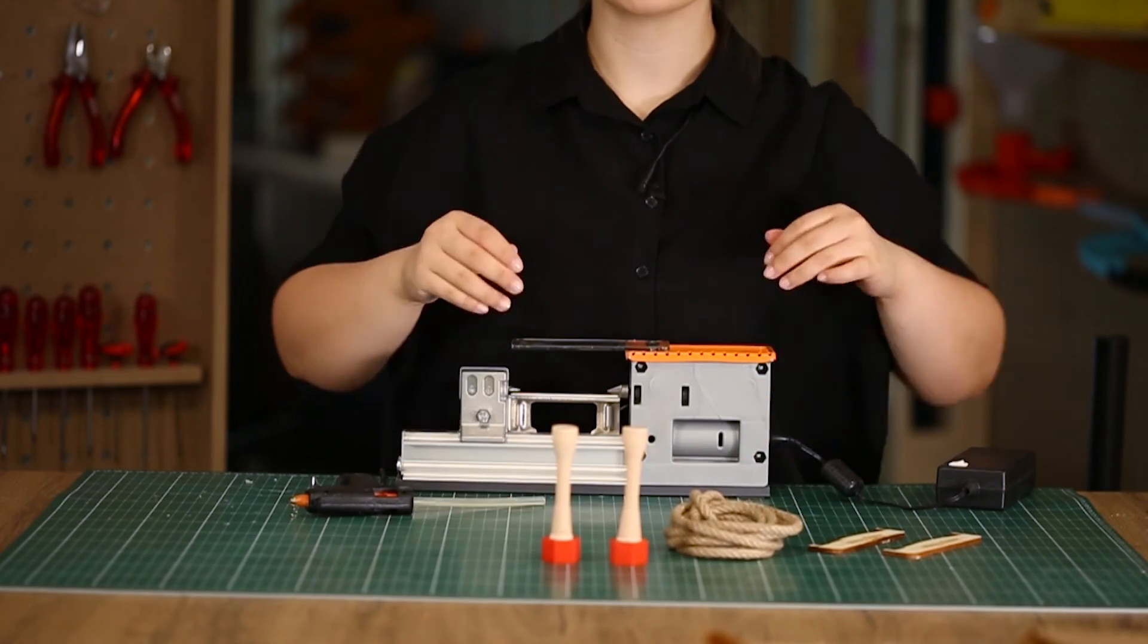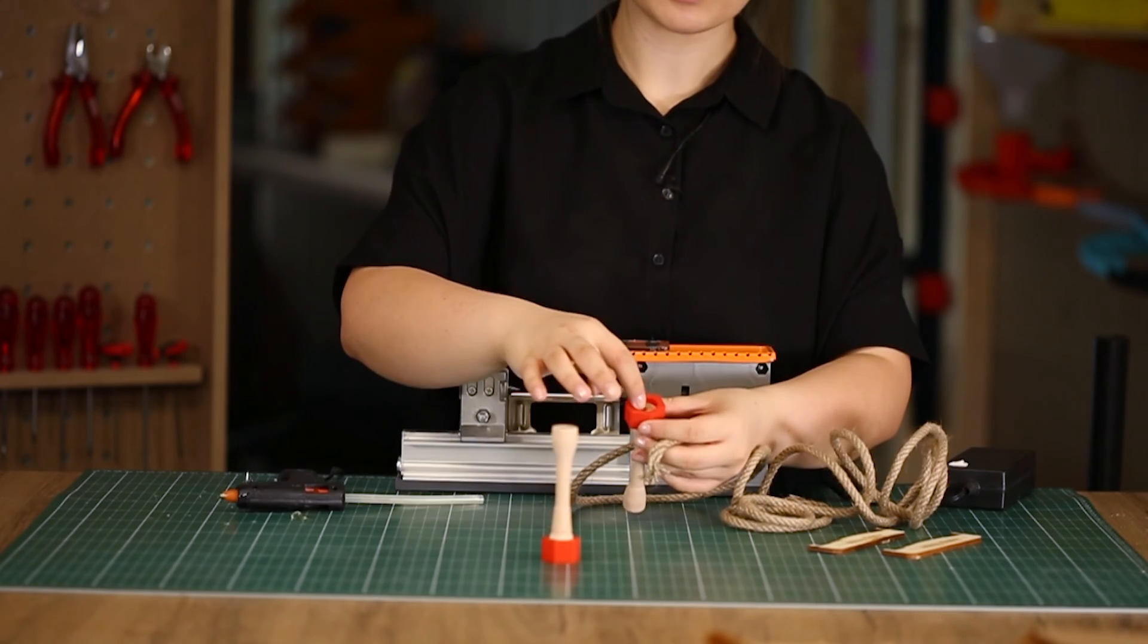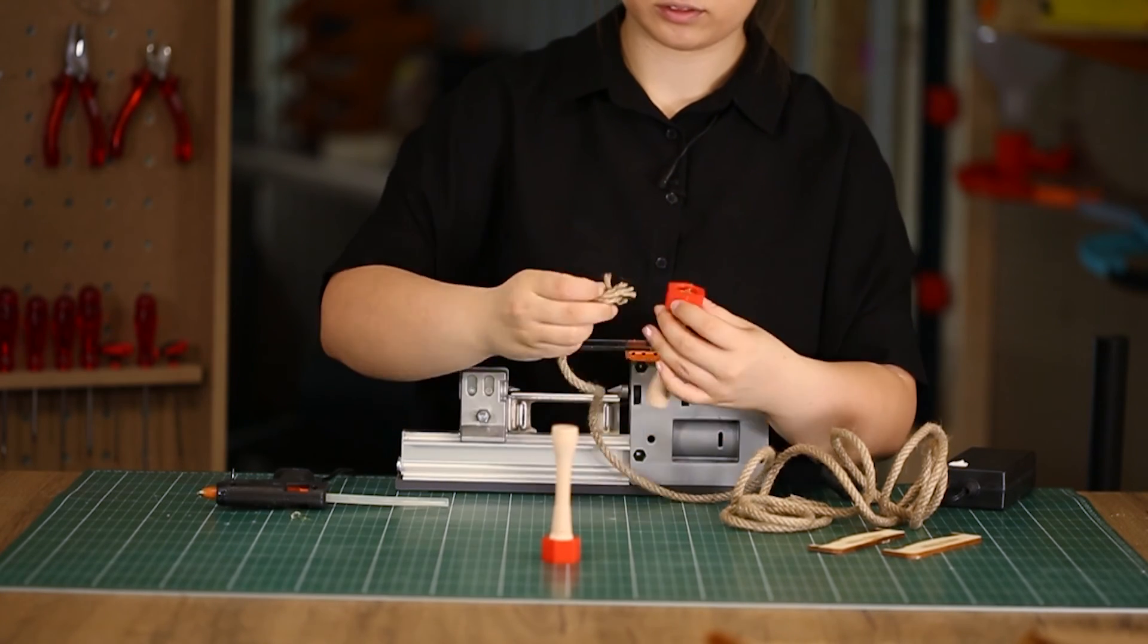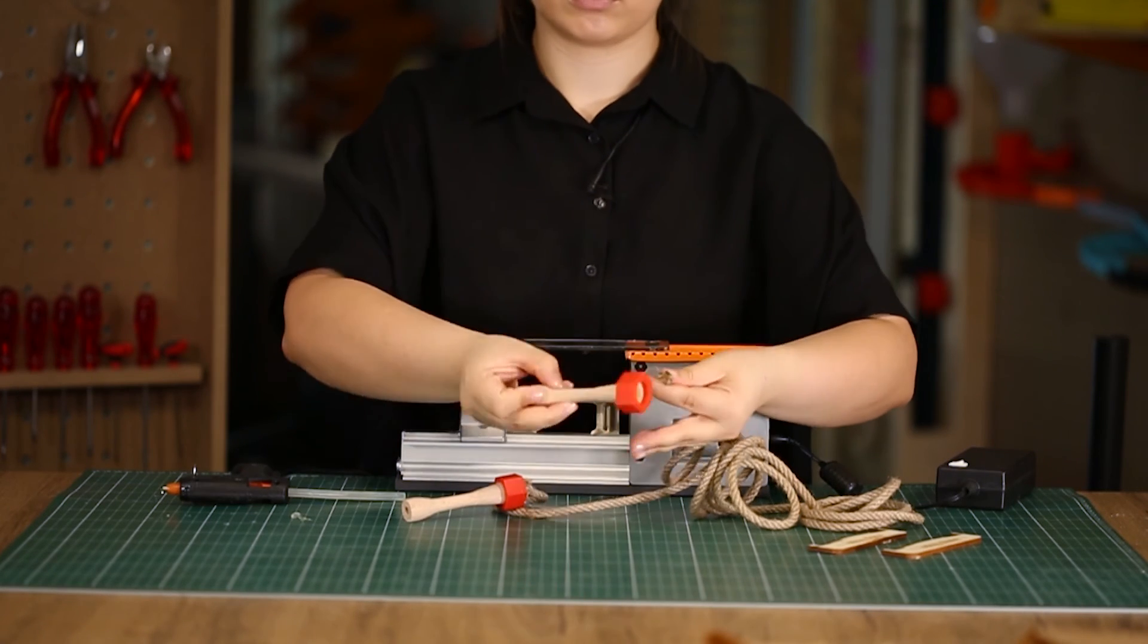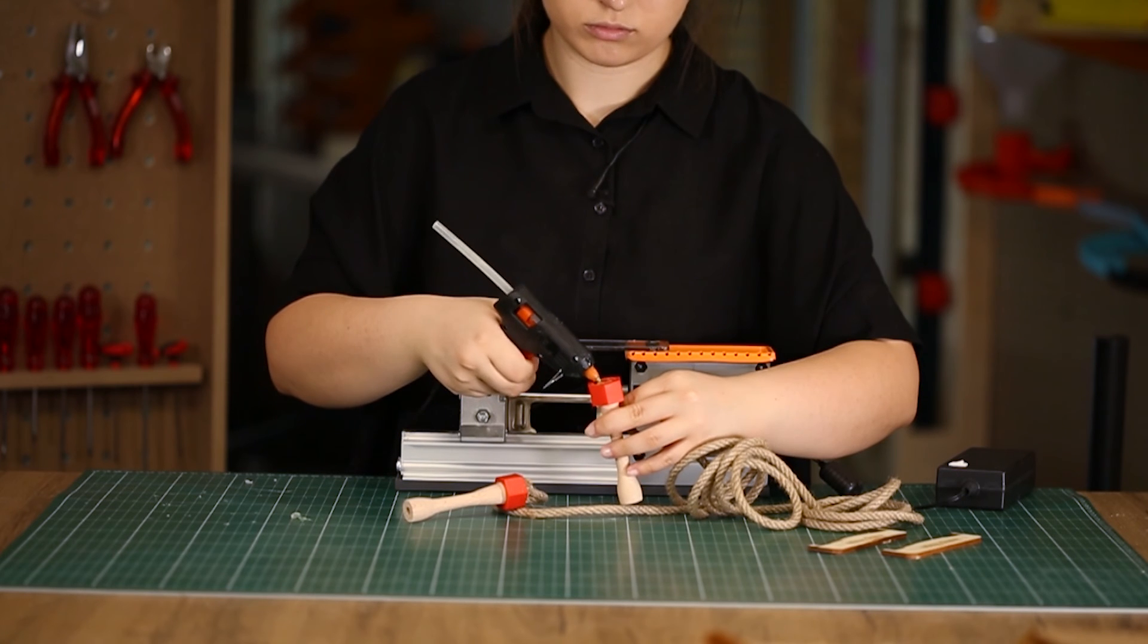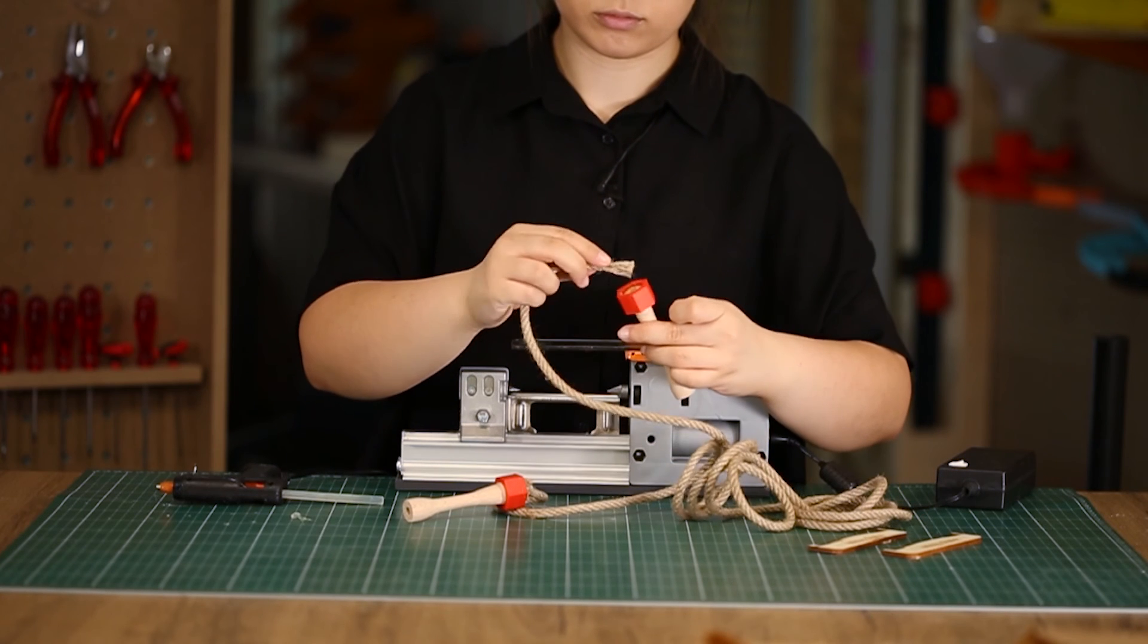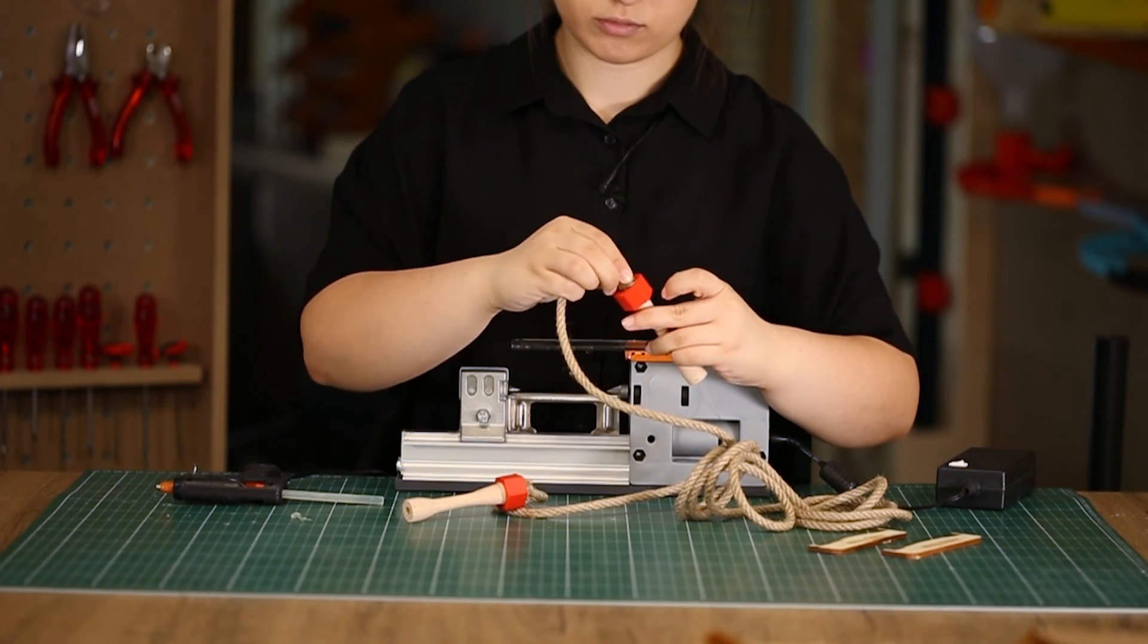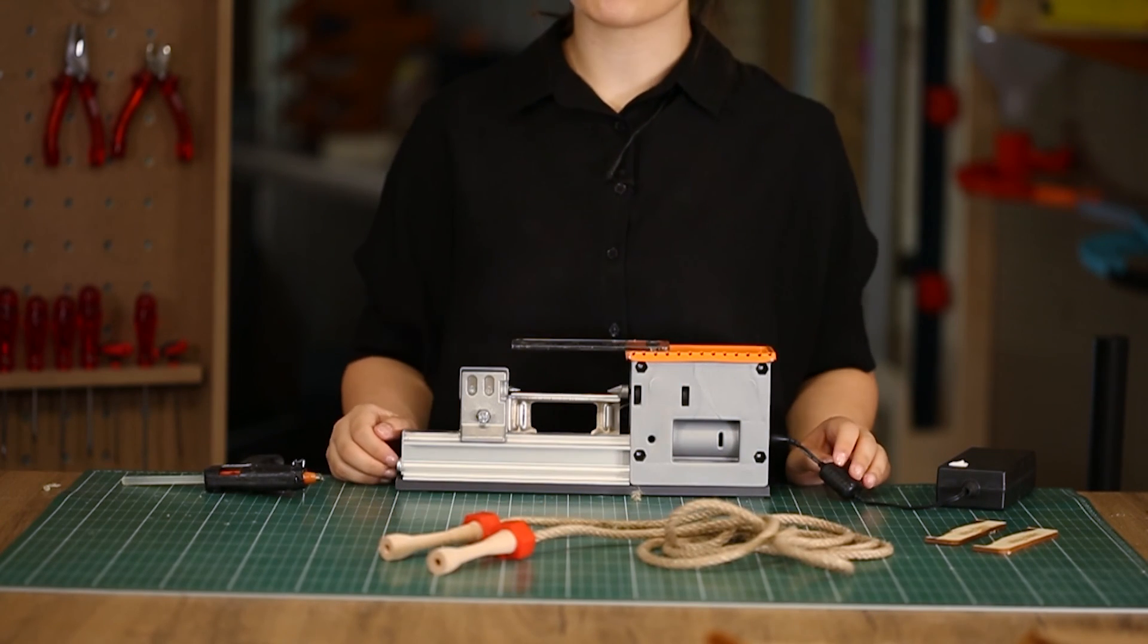Our handles are ready now. It's time to attach the rope. We will put hot glue here. Finally, our jump rope is ready.